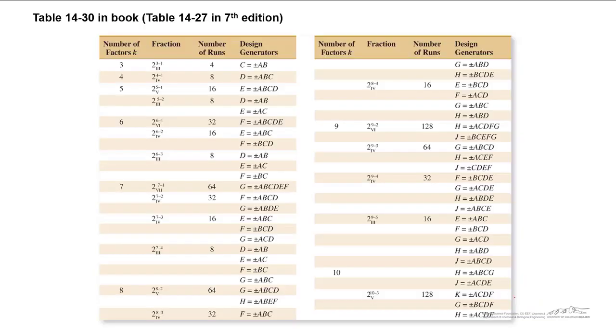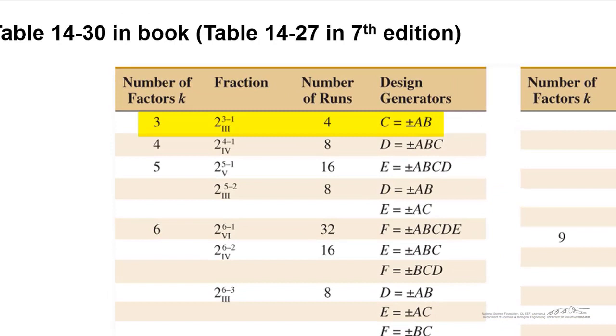Table 14.30 in your book outlines a bunch of different fractional factorial designs. We have the number of factors K, the fraction. We've already talked about the 2 to the 3 minus 1. There's all sorts of different designs. This table shows you the number of runs and also the design generators. So that C equals AB is what I just referred to. You notice that there's plus and minus for all of these. It's typical to choose the plus option and that's known as the principal fraction. The negative value is known as the alternate fraction. So here we chose C equals AB, but we could also choose C equals negative AB.